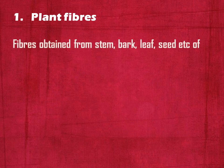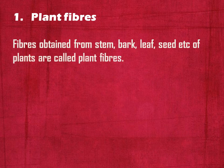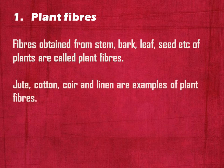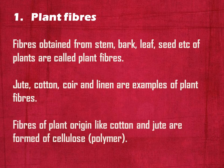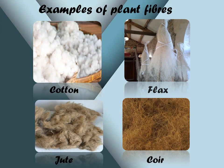Fibers obtained from the stem, bark, leaf, or seed of plants are called plant fibers. Jute, cotton, coir, and linen are examples of plant fibers. Fibers of plant origin like cotton and jute are formed of cellulose. Picture 1 shows cotton fiber obtained from cotton balls. Picture 2 shows flax, also called linen, obtained from the flax plant. Picture 3 shows jute obtained from the jute plant. Picture 4 shows coir, also a plant fiber, obtained from coconut.